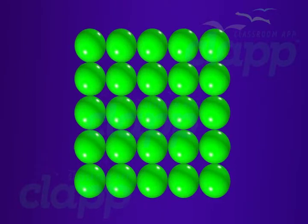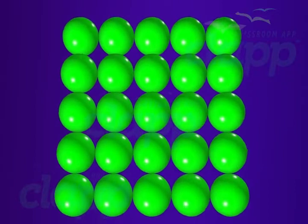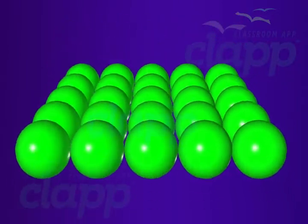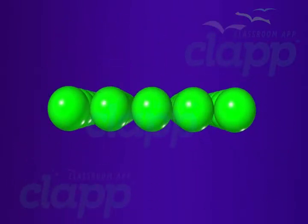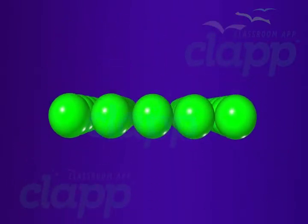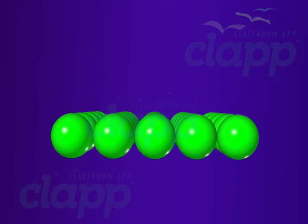All real structures are three-dimensional structures. They can be obtained by stacking two-dimensional layers one above the other. First, place one two-dimensional square close-pack layer and name it as A-type.